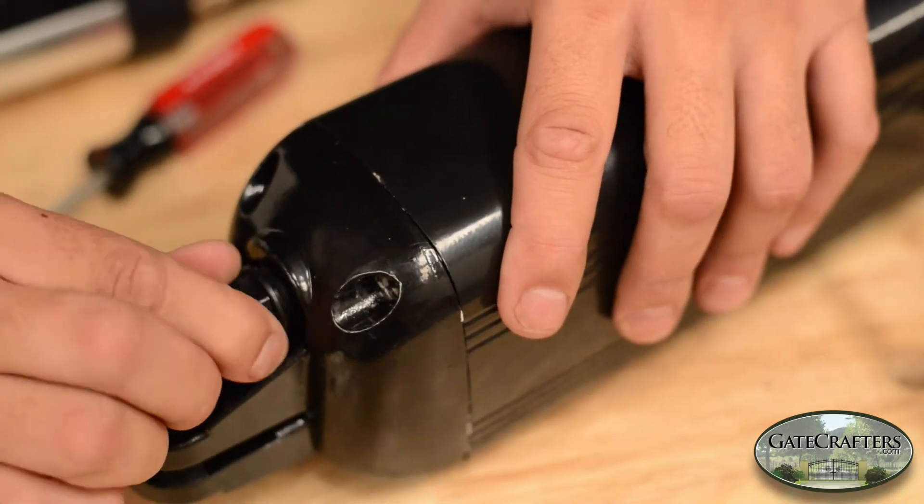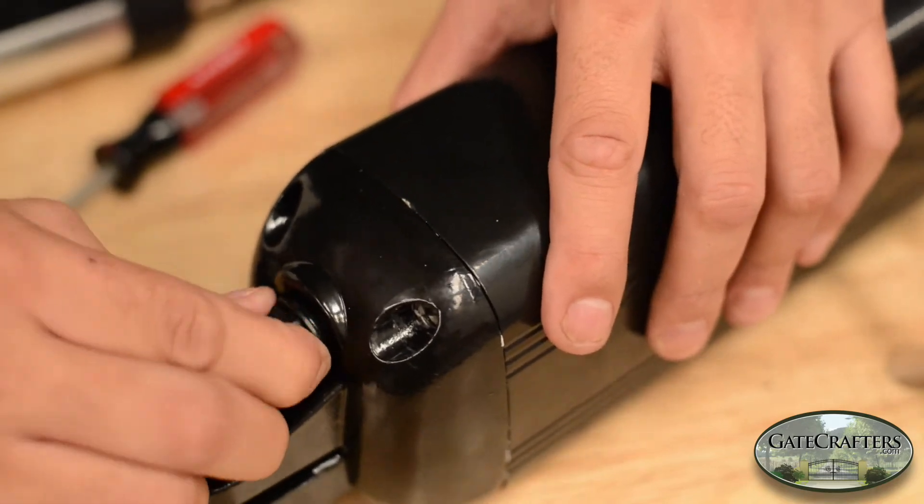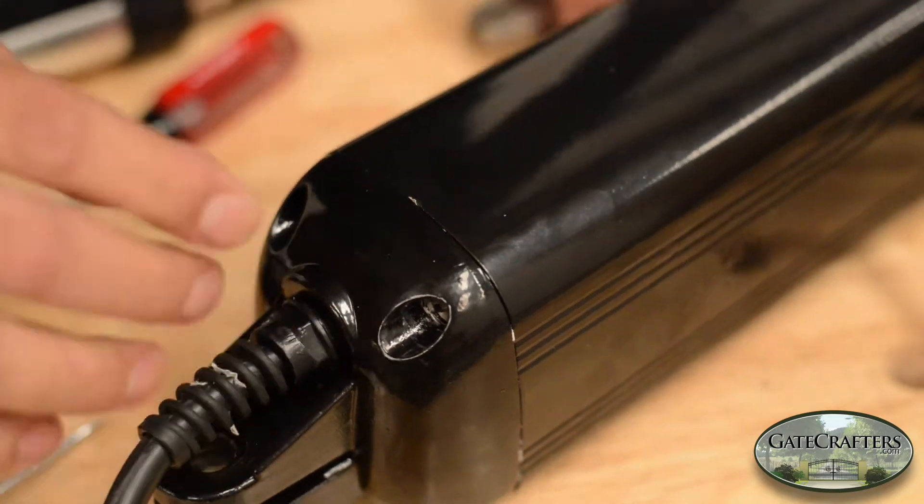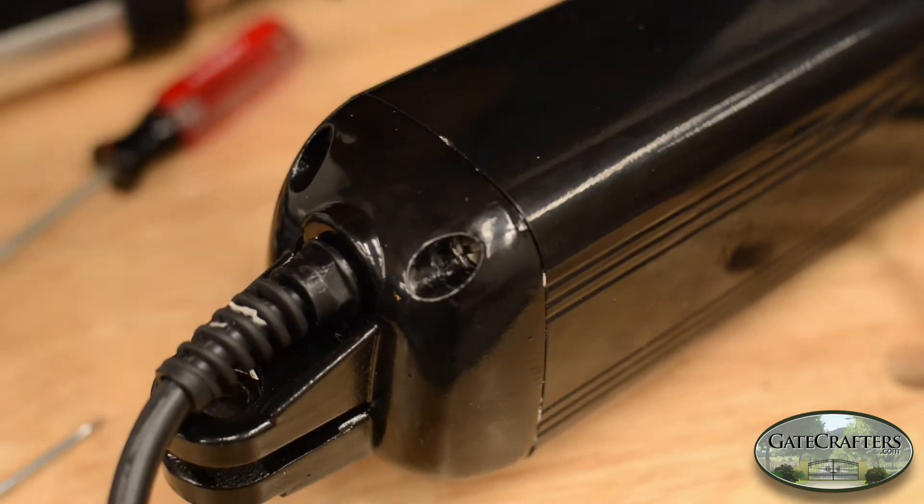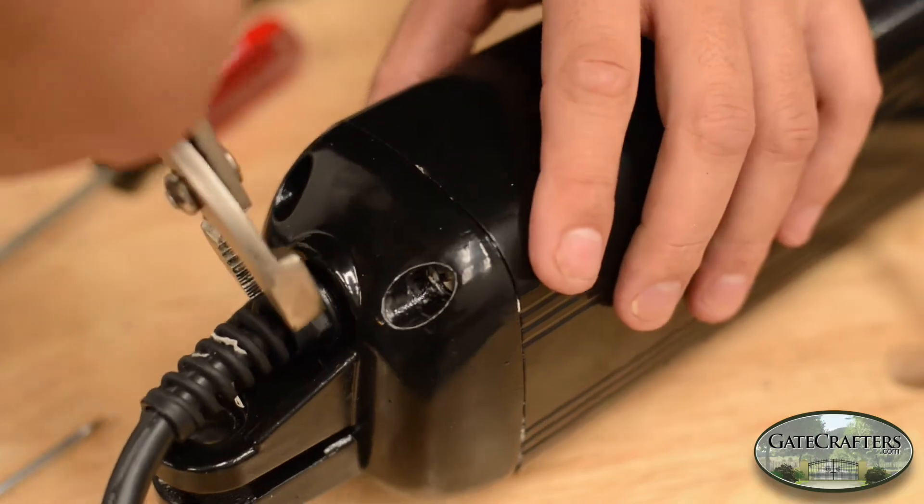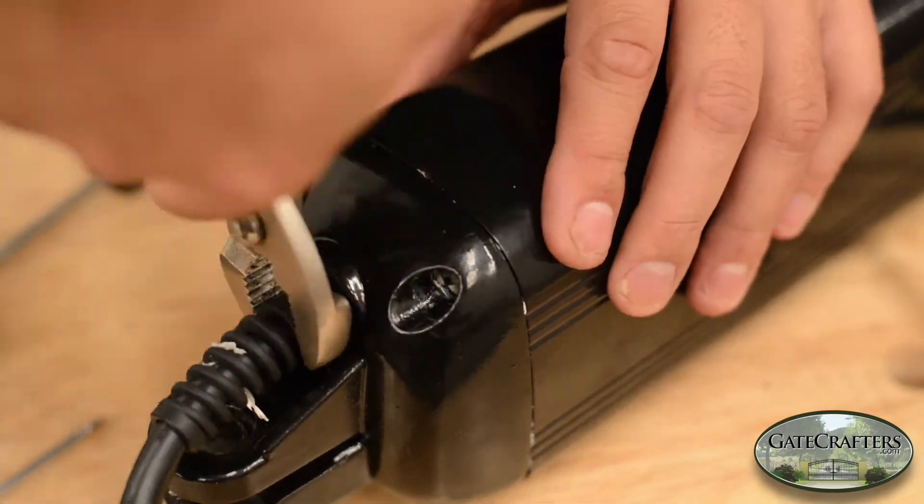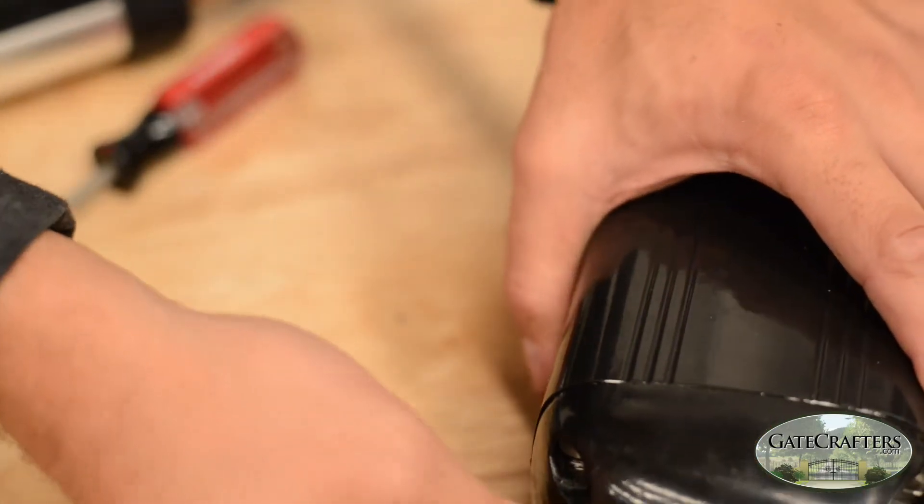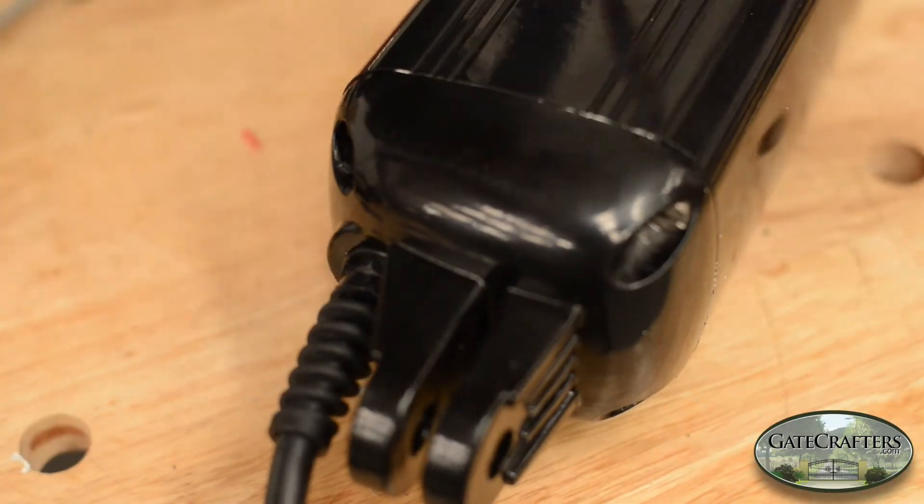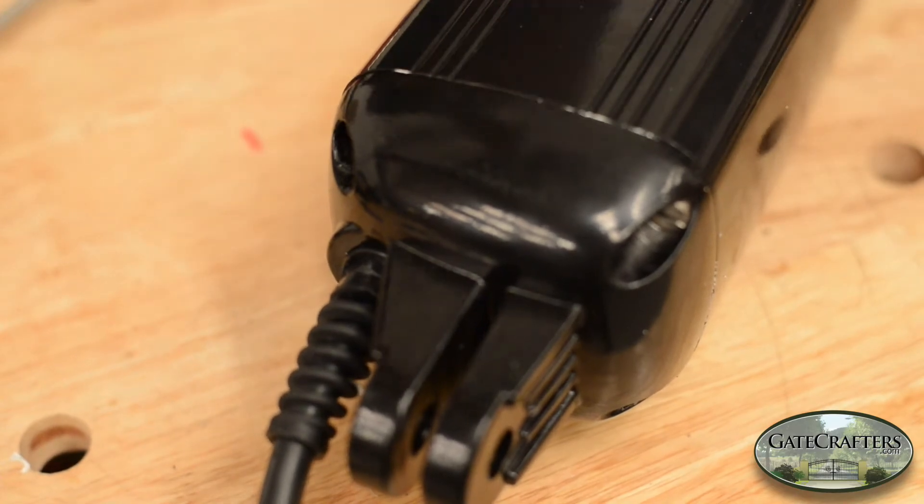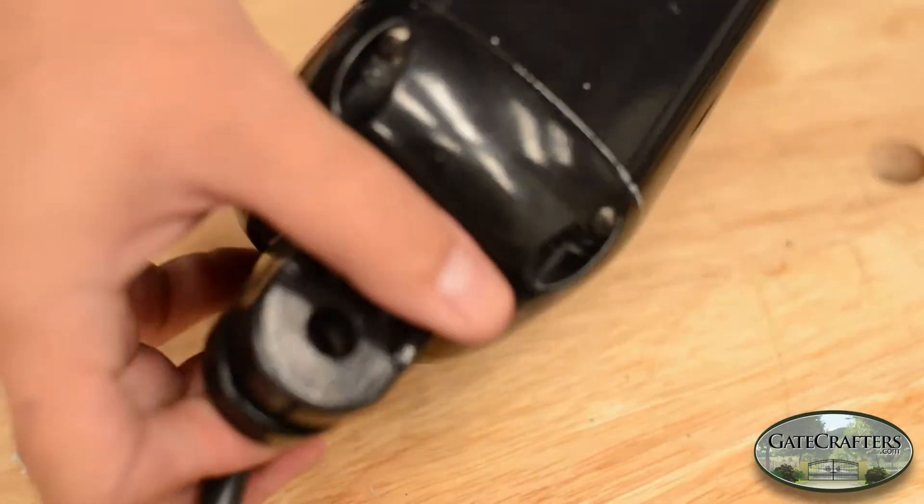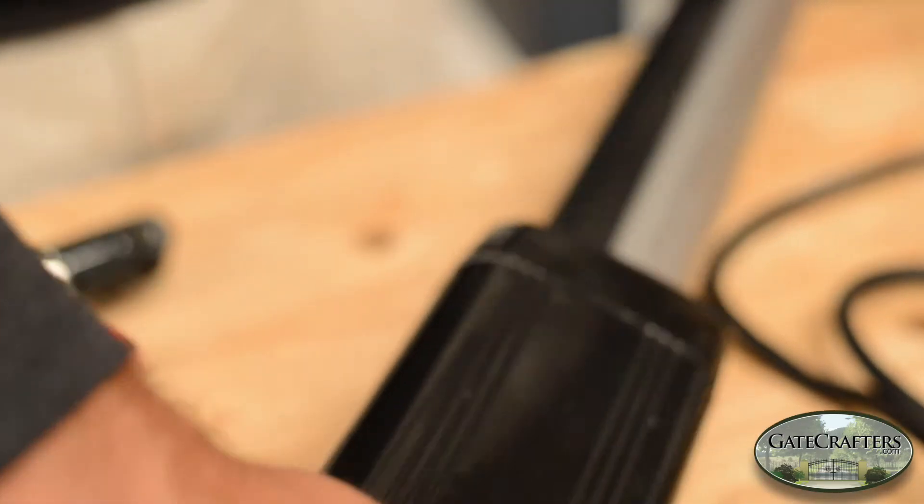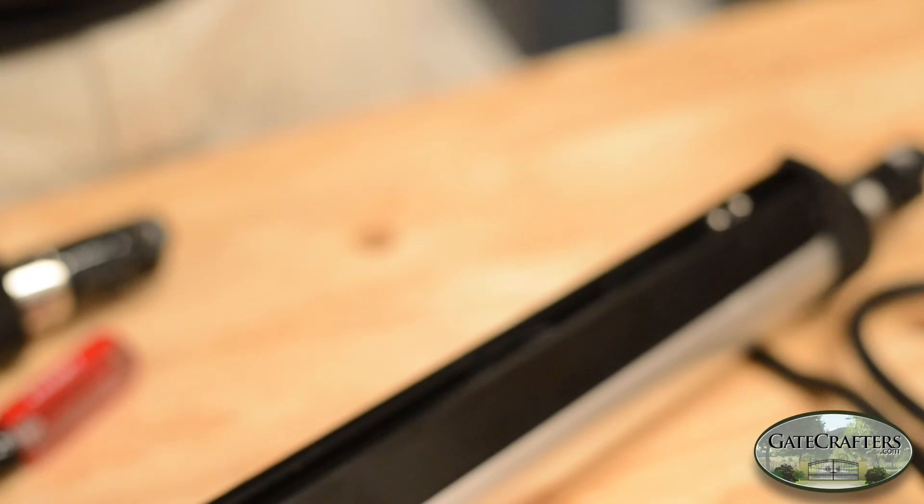It'll go the majority of the way with your hand, and then you can use the pliers to get all the way tightened down. That's nice and tight. And one more test to make sure nothing fell off while we're putting that back together. We'll check the continuity one more time and test the limit switches one more time. Make sure that we're good to go.